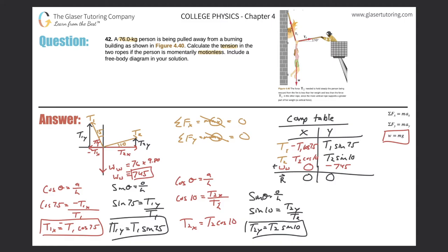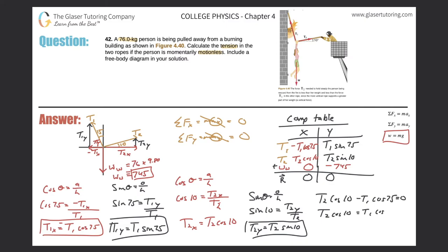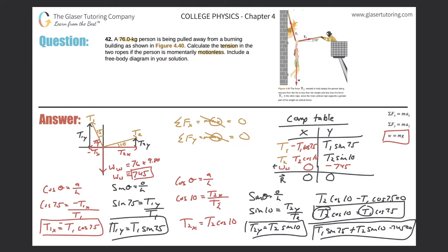Now I have two equations by summing each column to zero. For the x-direction: T2·cos(10°) − T1·cos(75°) = 0, which rearranges to T2·cos(10°) = T1·cos(75°). For the y-direction: T1·sin(75°) + T2·sin(10°) − 745 = 0. We have two equations and two unknowns — T1 and T2 — so this is a system of equations.